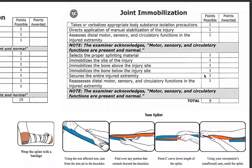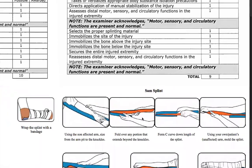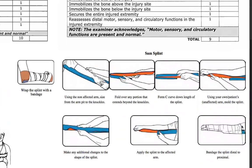Now let's talk about joint immobilization. This is an elbow dislocation. You immobilize the long bone above and the long bone below. The SAM splint comes in a roll — unroll it using the non-affected arm, size from the armpit to the knuckles, fold over any portion that extends beyond the knuckles, form the C-curve to give it rigidity. Using your own or the patient's unaffected arm, mold the splint, make any additional changes to the shape for strength, apply the splint to the affected arm, and bandage distal to proximal.